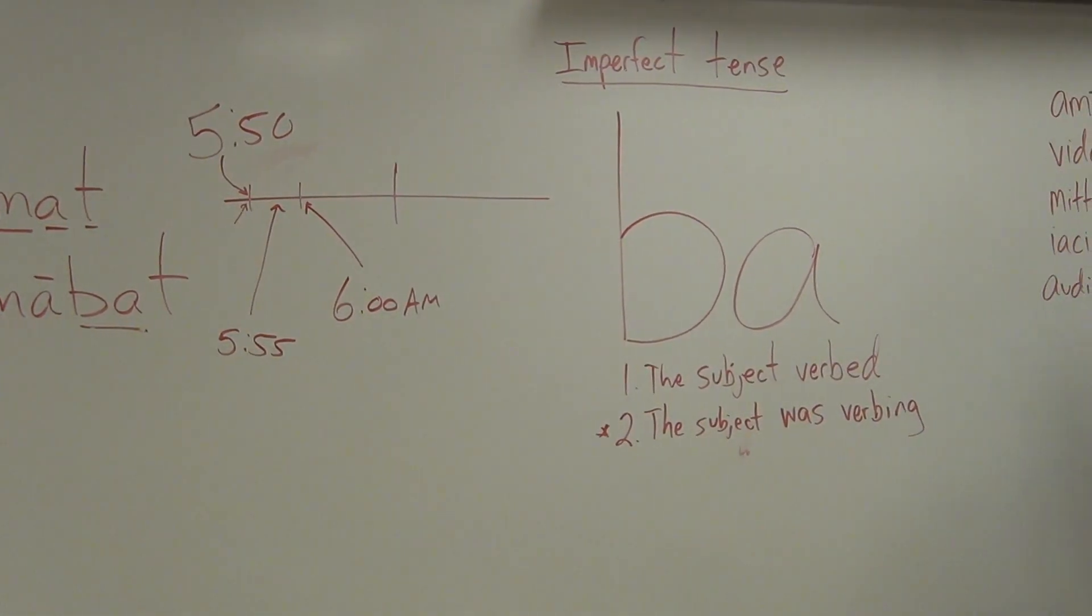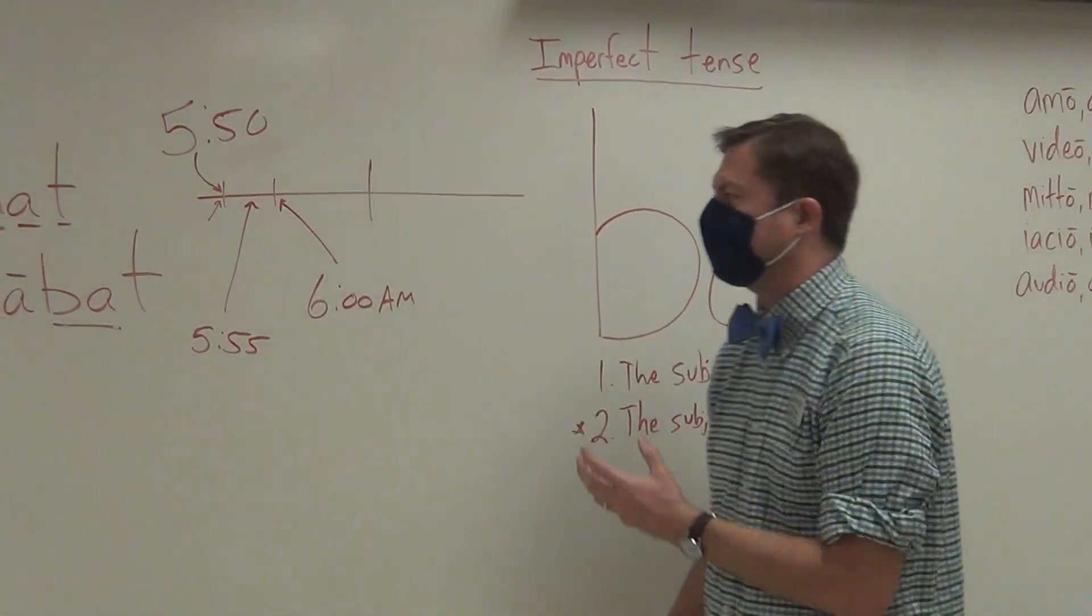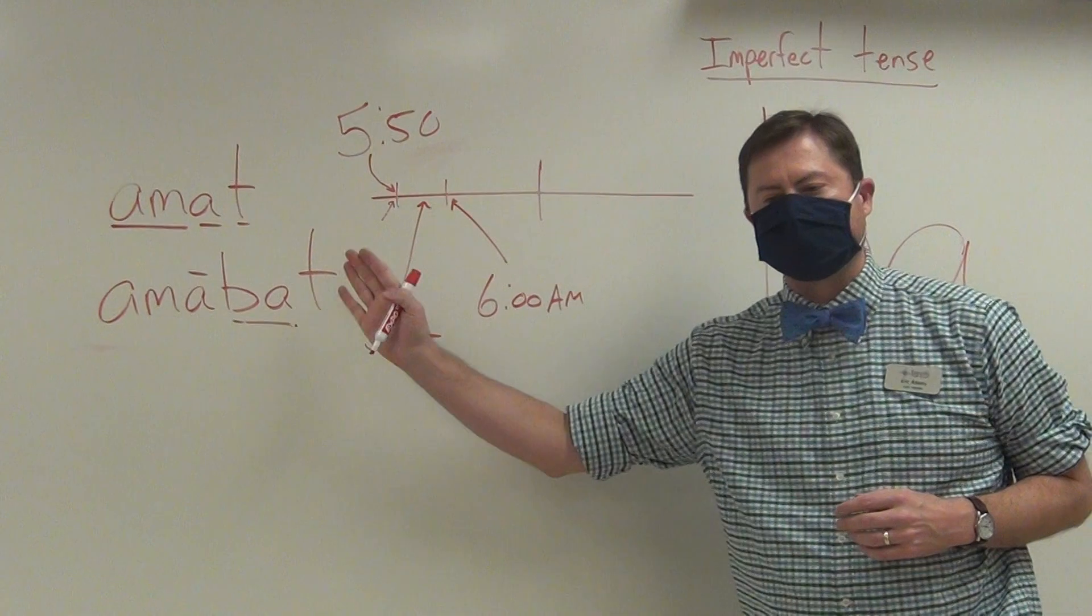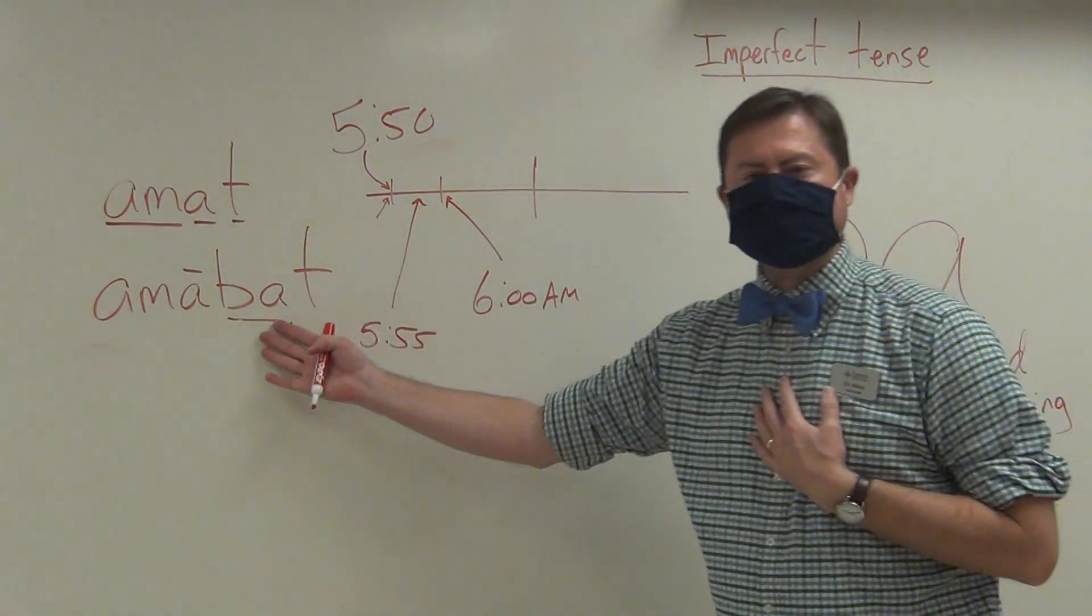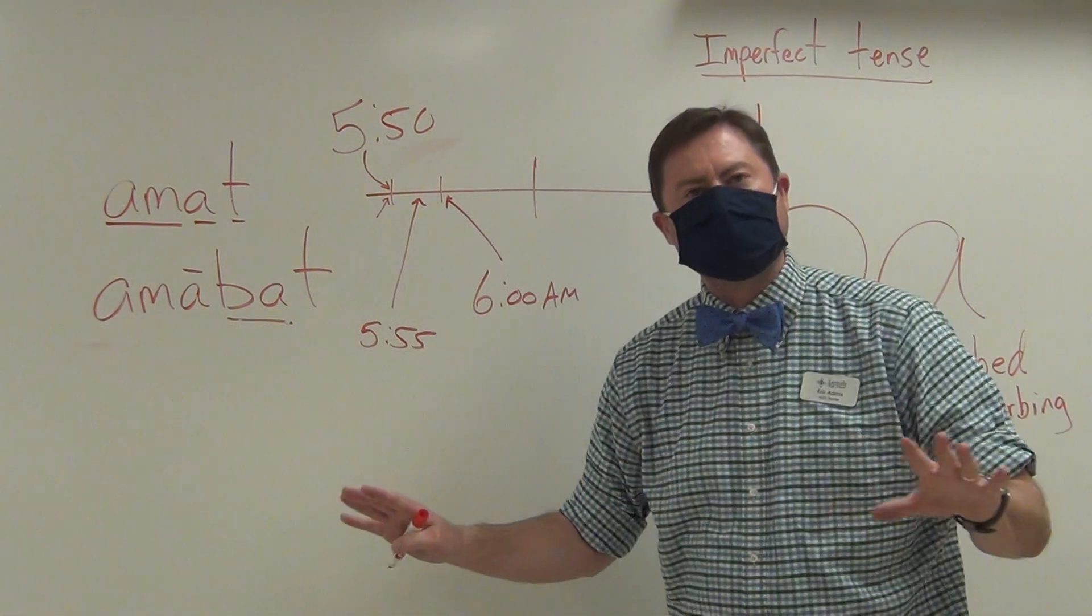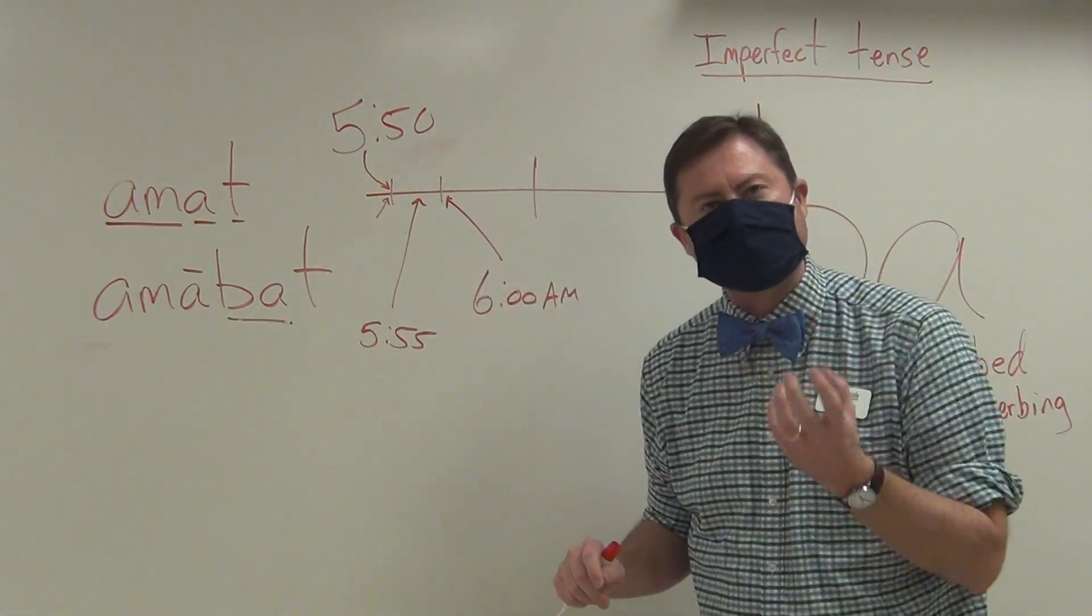Was verbing. Two words. Was verbing. And that is the way that you would express a verb when you see it in the imperfect tense. He was loving. And it's a not-completed action in the past, but not completed as we describe it.